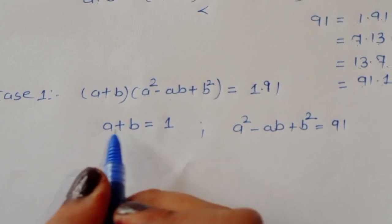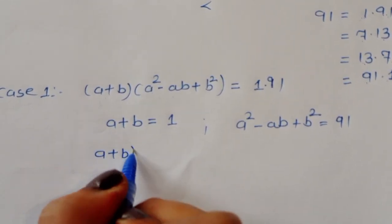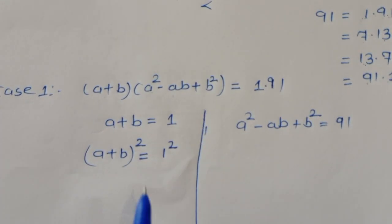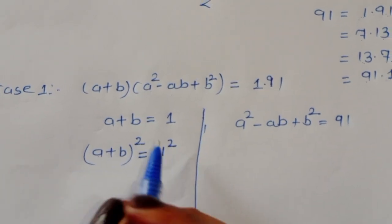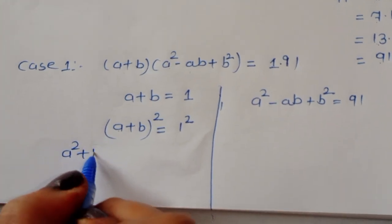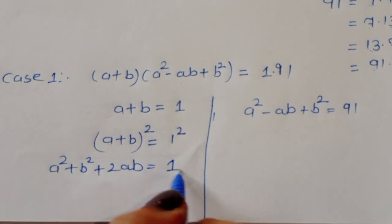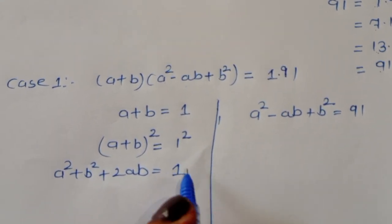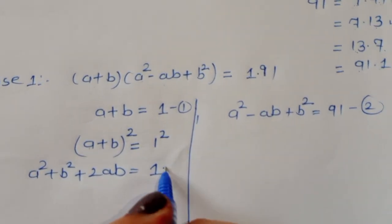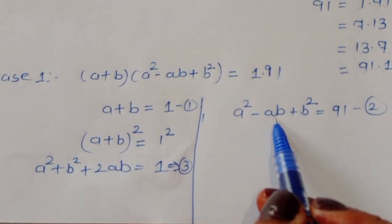Taking the square of equation 1: (a + b)² = 1². Expanding: a² + b² + 2ab = 1. This is equation 3. Now we have equations 1, 2, and 3. We need to subtract equation 3 from equation 2.